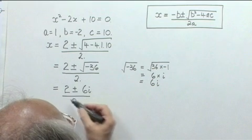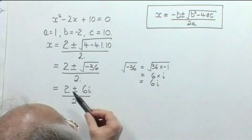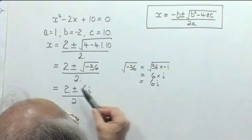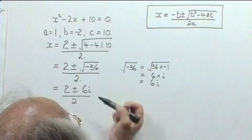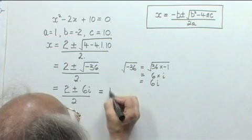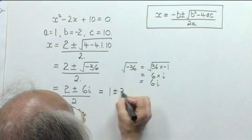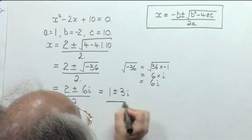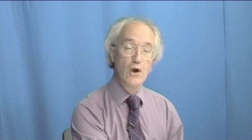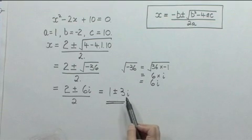And finally, if we just want to tidy this up a bit more, we can notice that there's a factor of 2 in the numerator and the denominator, which can be cancelled, which will leave 1 plus or minus 3i. So here we have two solutions of the quadratic equation. One of the solutions is the number 1 plus 3i, and another is the number 1 minus 3i.